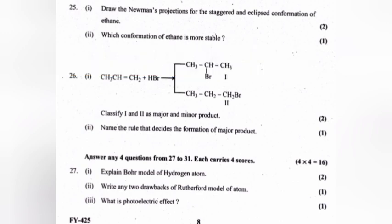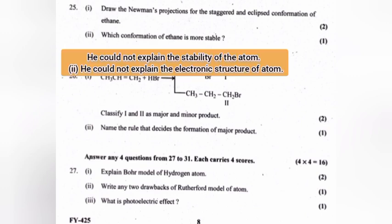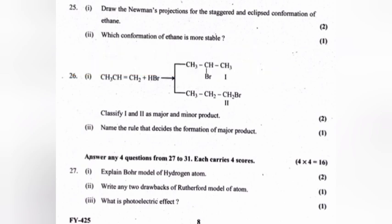Write two drawbacks of Rutherford's model of atom. (1) He could not explain the stability of the atom. (2) He could not explain the electronic structure of the atom.